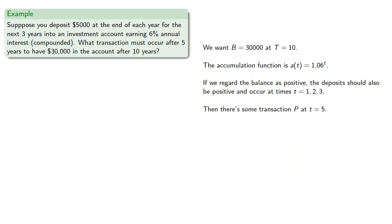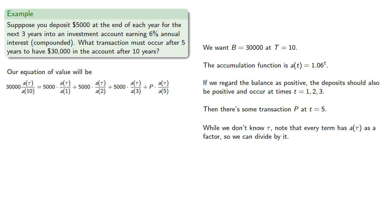Then there's some transaction p, at t equals 5. And so our equation of value will be. Now while we don't know tau, note that every term has a(tau) as a factor, so we can divide by it. And we can solve for p.